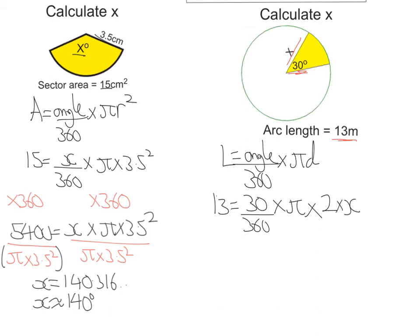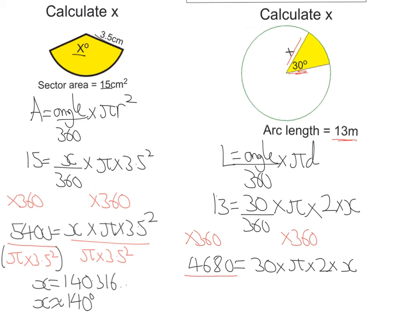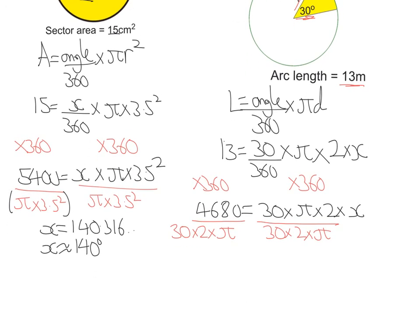As before, I multiply both sides by 360 to clear the fraction. That gives 4,680 on this side, and 30 times pi times 2 times x on the other. To get x on its own, I divide both sides by 60 pi. Putting that into the calculator gives x equals 24.828..., so to three significant figures, x equals 24.8 metres.